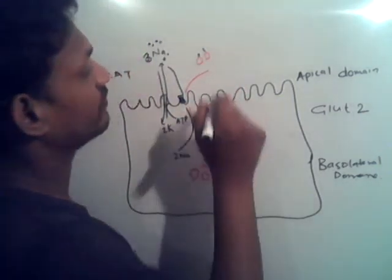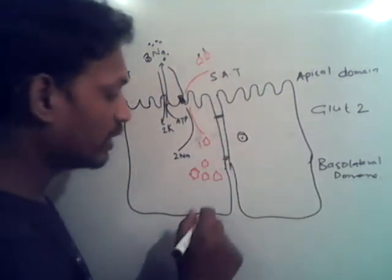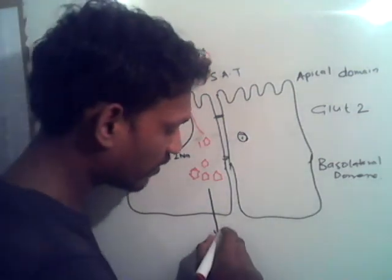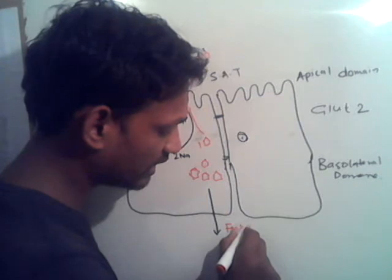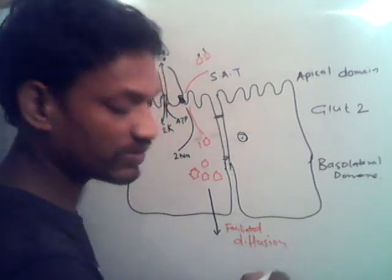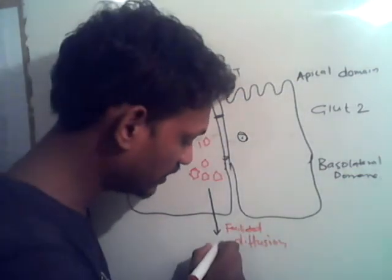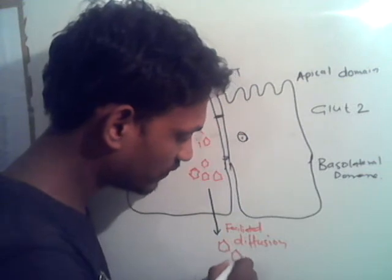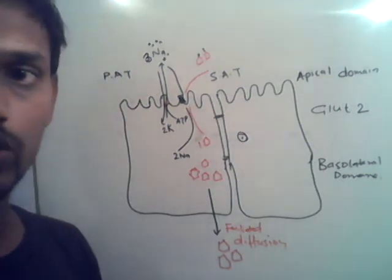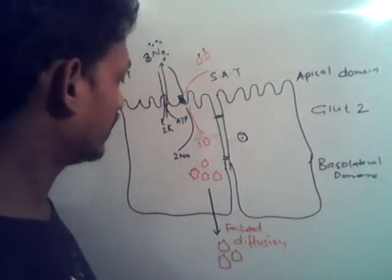This is a secondary active transport. Now, this glucose exits the cell via facilitated diffusion across the basolateral side. There is no energy molecule required for the transport of glucose out of this cell, because this is facilitated diffusion — a passive process.